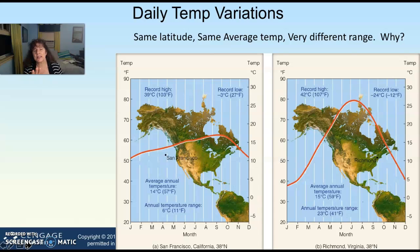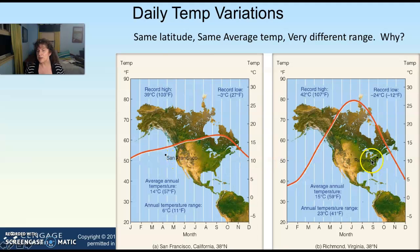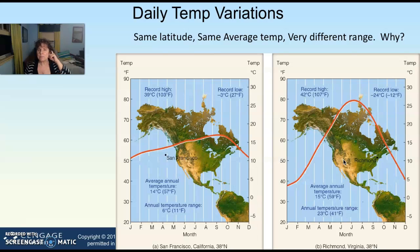There can also be variations depending on different impacts of locations around the earth. For instance, we have two cities: San Francisco and Richmond, Virginia. They're at the same latitude, right at about 40 degrees latitude. They have the same average temperature but very different ranges. Their average temperature is 14 degrees Celsius versus 15 degrees Celsius in Richmond — very similar average.